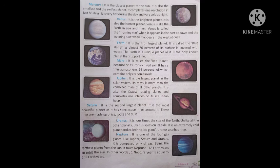Saturn — Shani grah: Yeh sabse khoobsurat grah hai kyunki iske chaaron or shandar challe hain. Ye challe barf, chattanon aur dhool se milkar bane hain. Uranus: It is four times the size of the earth. Unlike all the other planets, Uranus spins on its side. It is an extremely cold planet and is called the ice giant — ise barf ka vishalkay kaha jaata hai. Uranus also has rings.